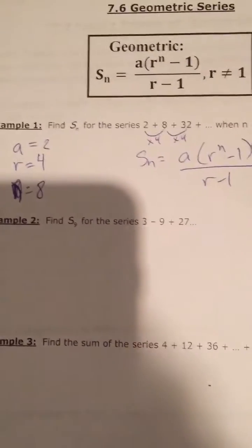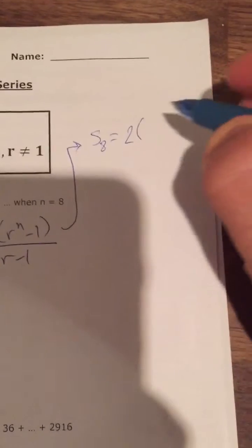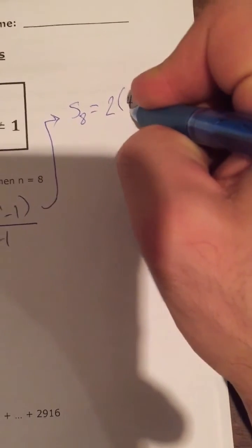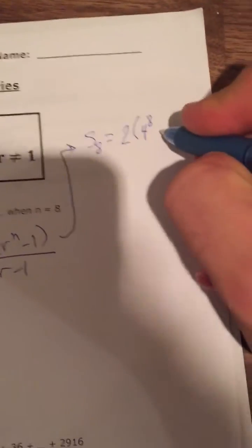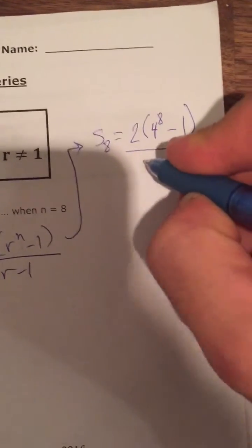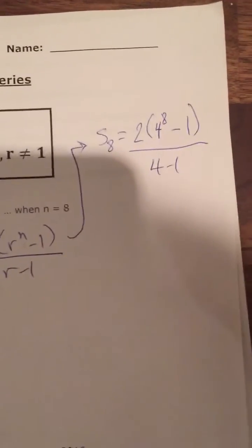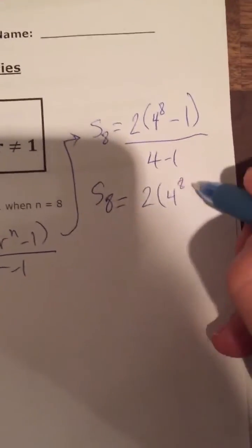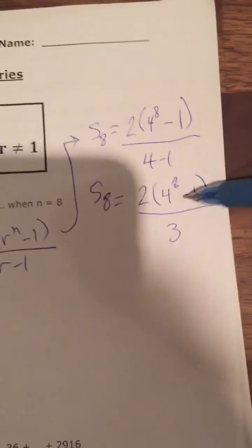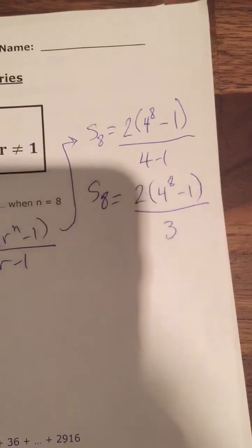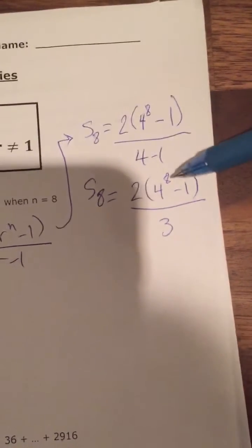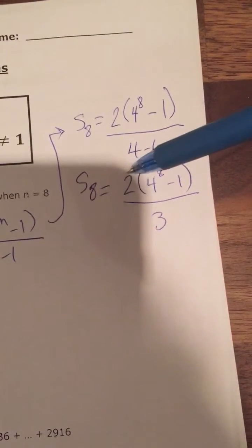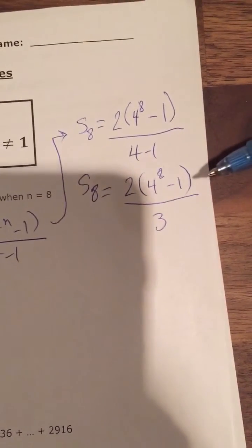When I substitute these values into the formula, the sum of the first 8 terms equals 2 times r, which is 4, to the power of n which is 8, minus 1, all over r which is 4, minus 1. You can take out a calculator and figure out the value. Figure out the brackets first — 4 to the power of 8, subtract 1, multiply by 2, divide by 3, and that gives you the sum of the first 8 terms.